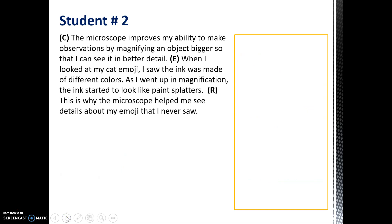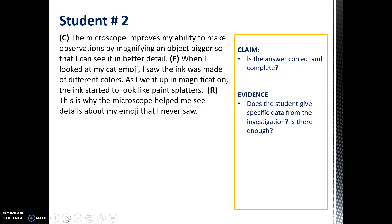For student number two, you're going to use the same criteria to evaluate the response. As you're looking at the claim, make sure that first sentence gives a clear, correct, and complete answer. When you're looking at the evidence, make sure that the student has given observations that he or she recorded directly in their science journal. While you may be tempted to put in your personal opinion or personal experience, that's really not a good source of evidence, so be wary of that.